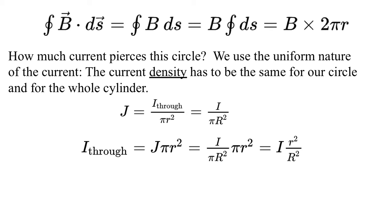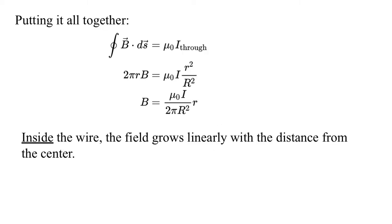The symmetry ensures the field is tangent to any circle we pick, which simplifies our integral. For inside the wire, we take an Amperean loop, and B is always tangent to it by symmetry. Applying Ampere's law: the integral of B dot dS, since B and dS point in the same direction, is just B ds. Since B is only radially dependent, it's constant along the loop, so we can take B outside the integral. Integrating dS gives the path length, so the result is B times 2πr.